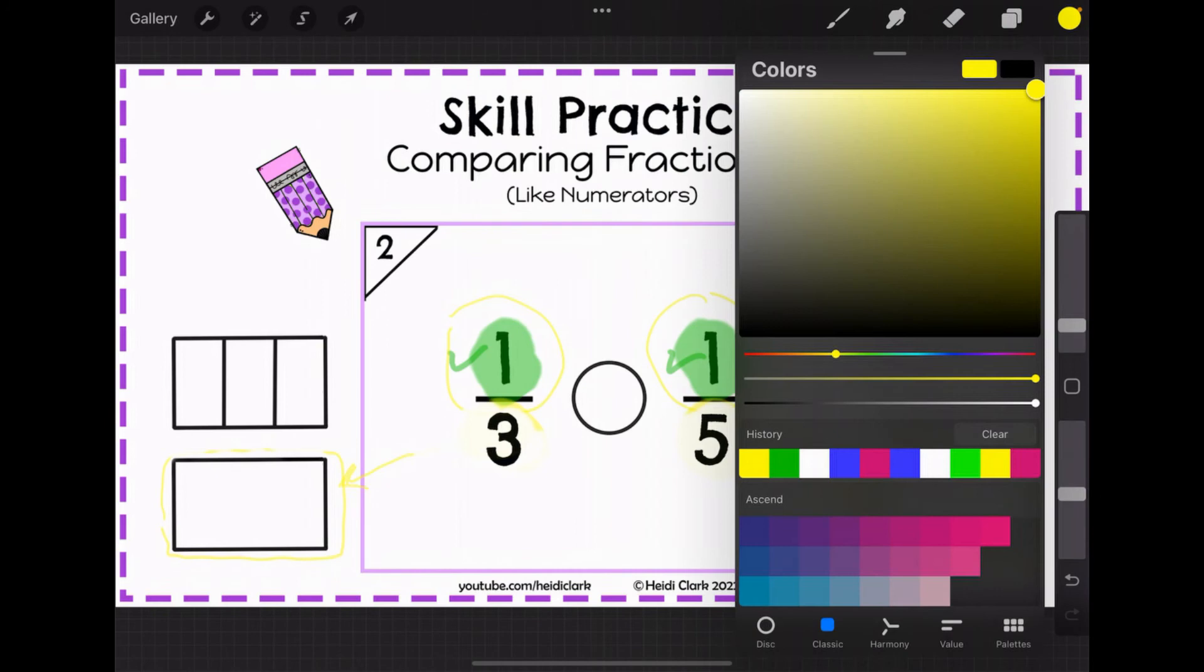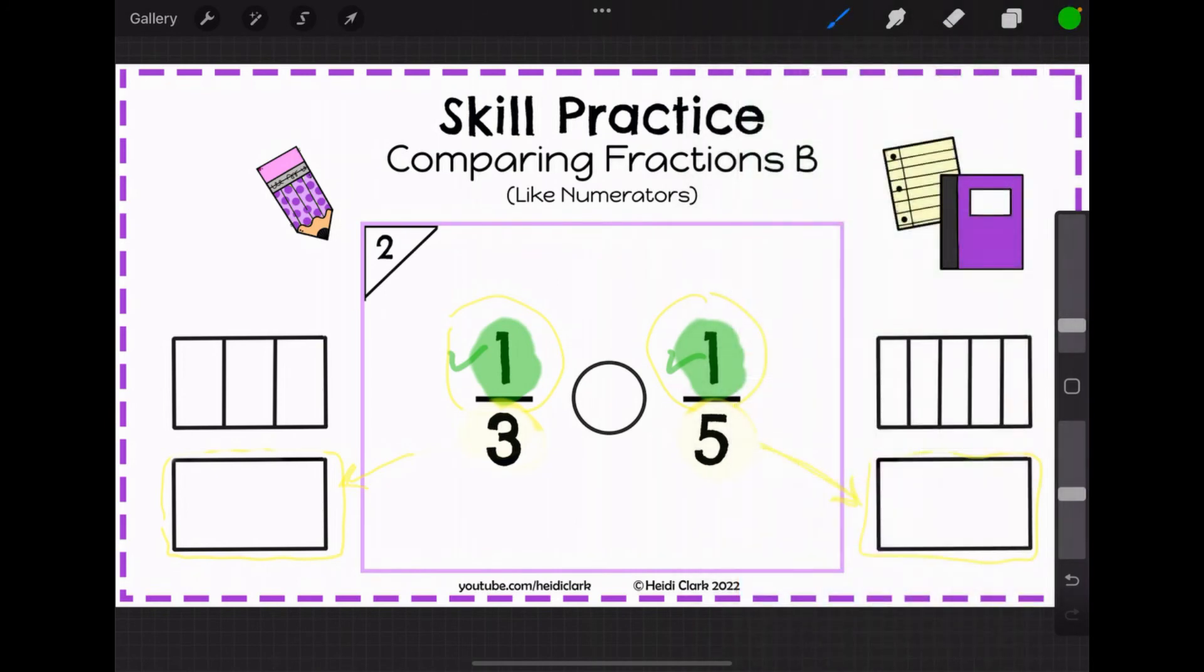Let's go ahead now and fill these in. On the left you're getting one piece because the numerator is one. On the right you're getting one piece because the numerator is one. Which side has bigger pieces? The left because the denominator is small so you only had to share with three.